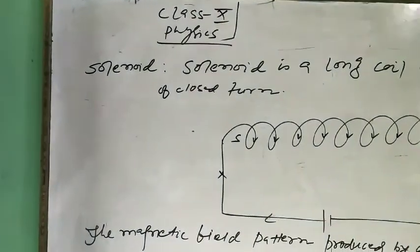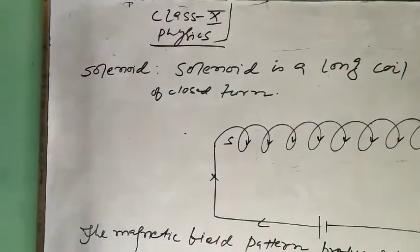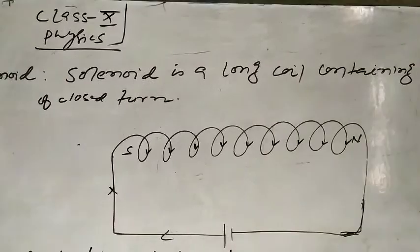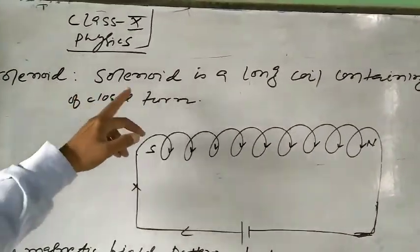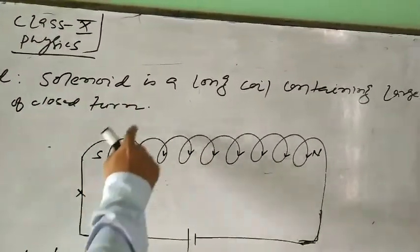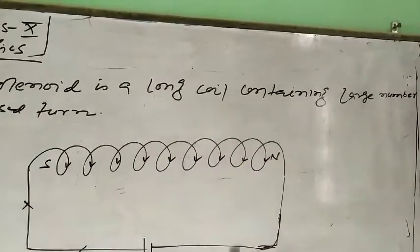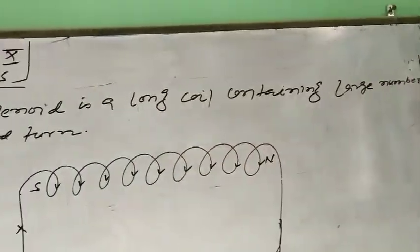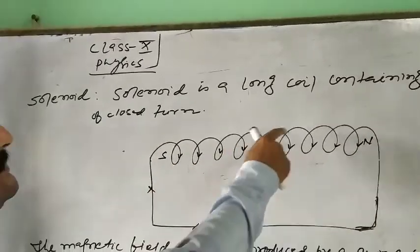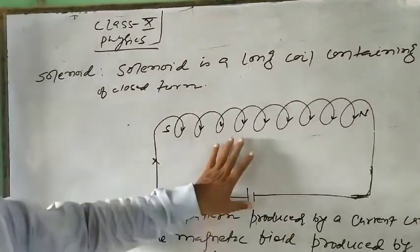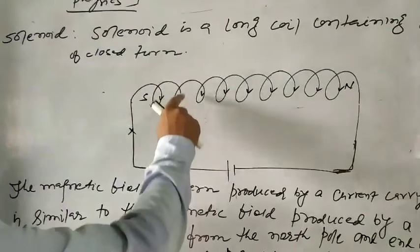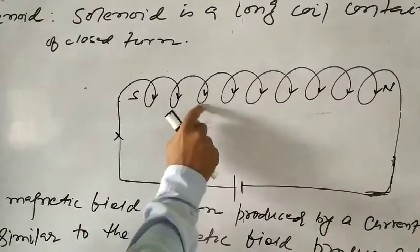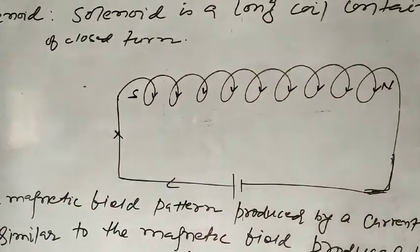First of all, we want to know what is a solenoid. A solenoid is a long coil containing a large number of closed turns.